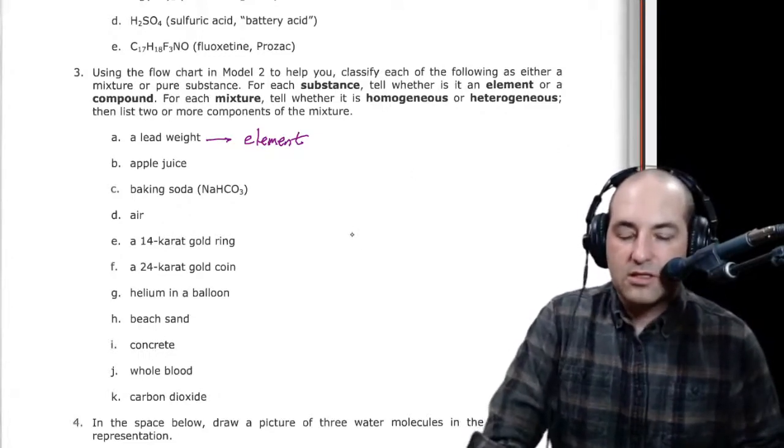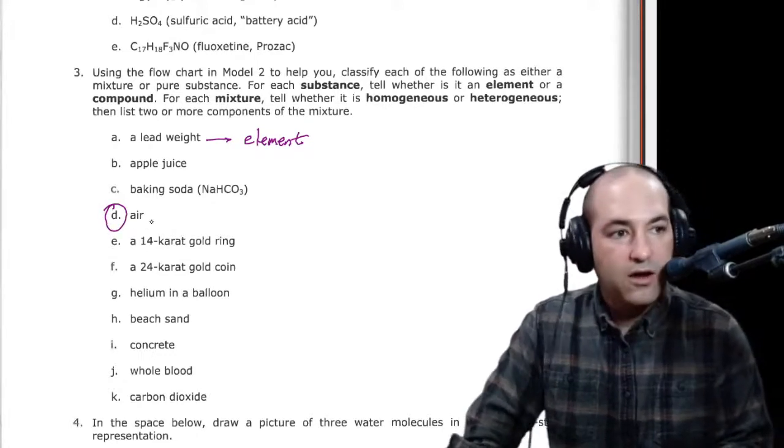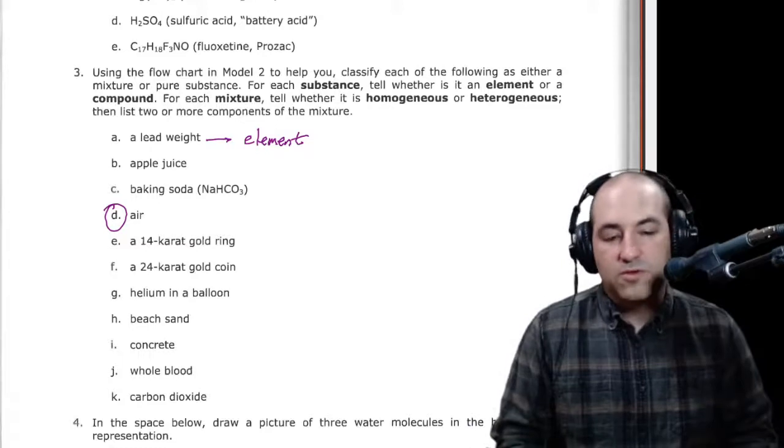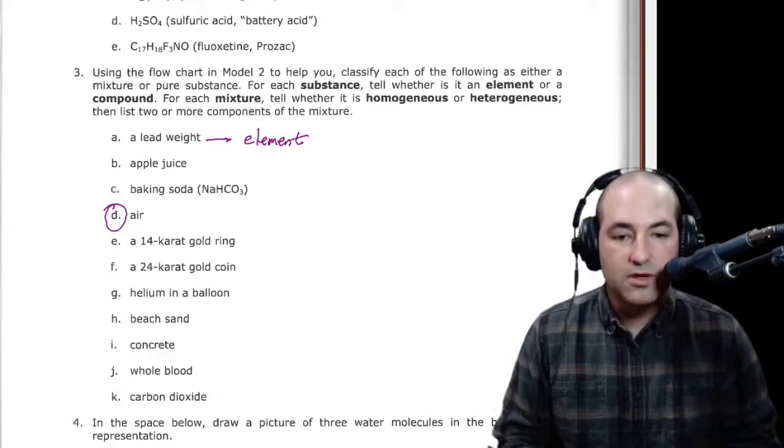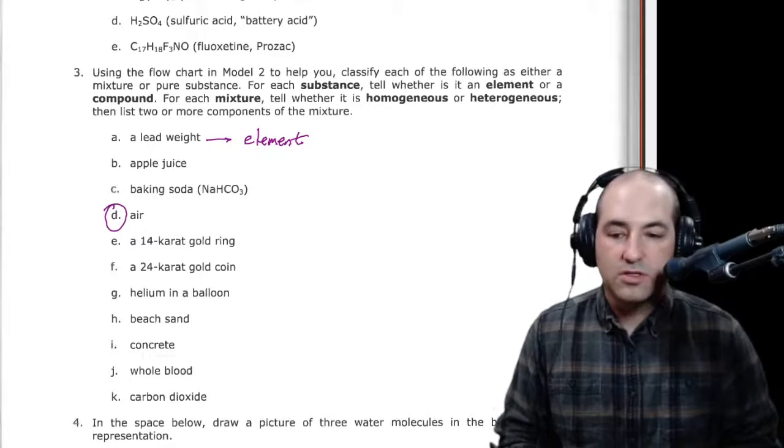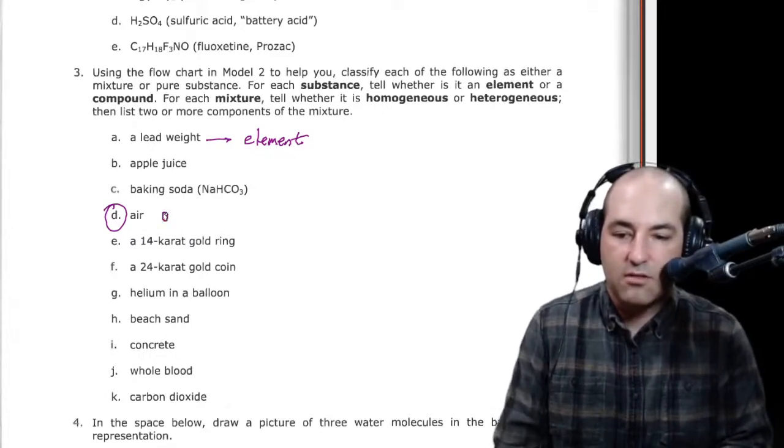Let's look at D, air. So air, what is air made of? Now, to figure this out, you may have to do a little bit of digging. You may have to look some stuff up, particularly the components of air. So I will tell you that air is made of, if you don't know, oxygen, nitrogen, water vapor,